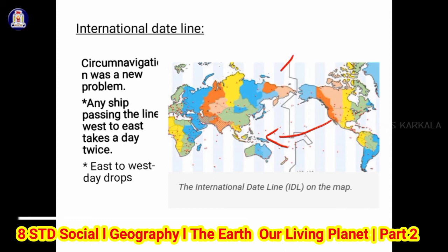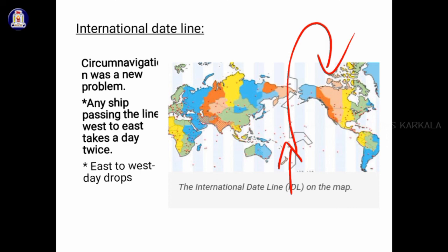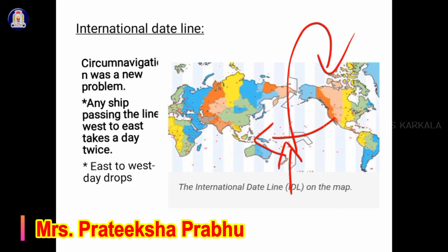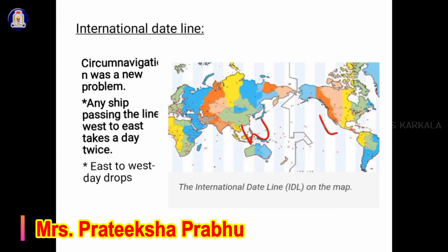Now let's learn about the International Date Line. The problem of time in different countries was solved first by standard time and then by zonal time, but when people started traveling across the ocean during circumnavigation of the world, a new problem arose — they had difficulty keeping the correct date and day of the week. The line passing through the 180 degree meridian, diametrically opposite to the Greenwich meridian, is called the International Date Line. It is called so because the date and the day change whenever people cross this line by ship or aeroplane.